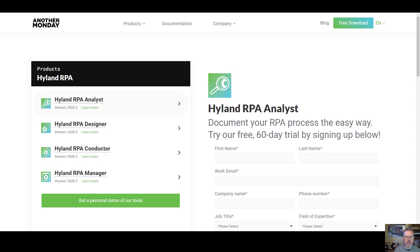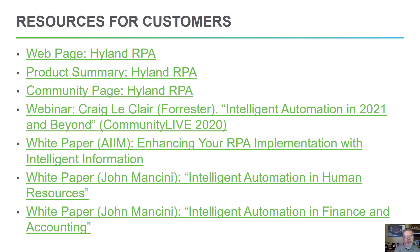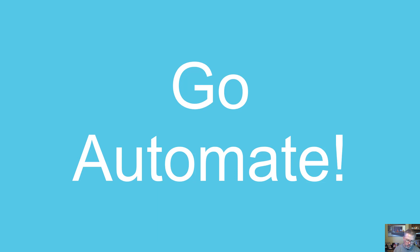Of course, Naviant and Hyland — myself — are happy to help. But we really make these tools available so you can think about work in a different way. You also have the ability to download the software yourself and try it in your own test or development environment. We make the Analyst and Designer tools available to anybody who wishes to download them for 60 days. We also make plenty of resources available, from marketing content to webinars and white papers we've done with folks like Craig Leclerc and John Mancini in the industry, to really talk more forward-looking about where they see intelligent automation going, both as an industry and in market segments like finance and accounting and human resources. So go forth and automate. The tools are available, the time is right, and the benefits to your organization are just apparent.